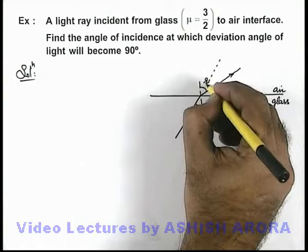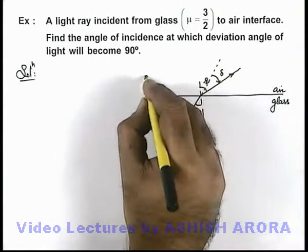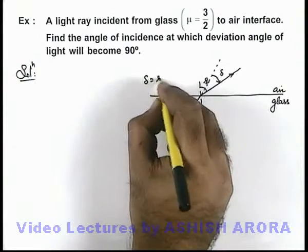With respect to the original direction of the incident light, it is deviated by an angle delta, which can be directly given as r minus i.